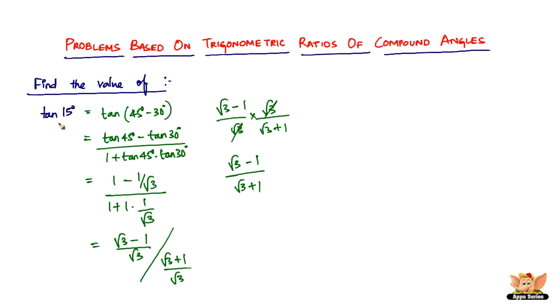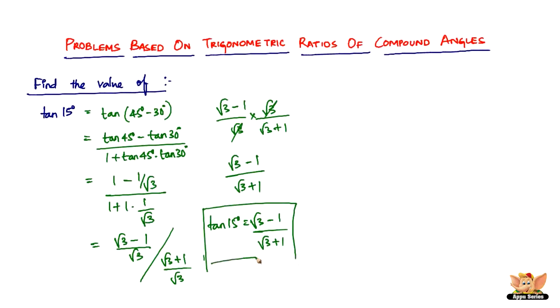Therefore, tan 15 degrees equals root 3 minus 1 divided by root 3 plus 1. So that ends this problem.